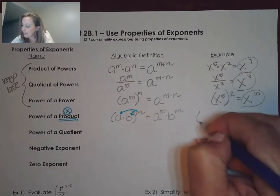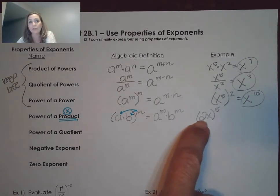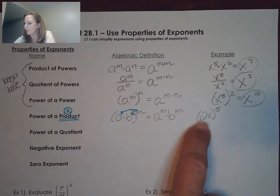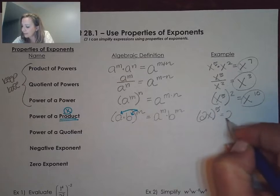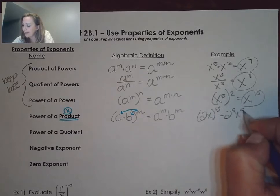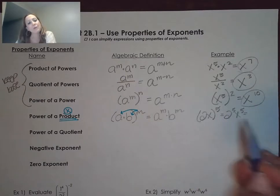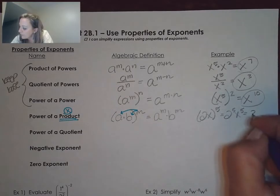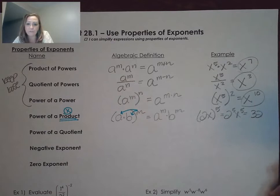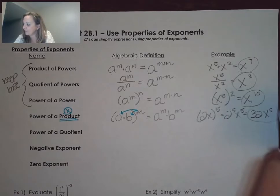An example would be 2x to the fifth. When I see 2x, that means 2 times x, so that is a product. That means I can apply this exponent to each factor. I'd have 2 to the fifth and x to the fifth. When you have a number like 2 to the fifth, let's evaluate that — that would be 32, and then x to the fifth just stays x to the fifth.